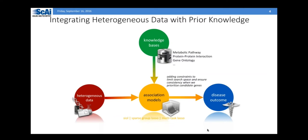This integration can also help us remove noise in the data and remove errors or false positives in those knowledge bases. The result, hopefully, is that we'll do a better job prioritizing candidate genes. So the idea is we could go beyond the space of metabolic pathways.